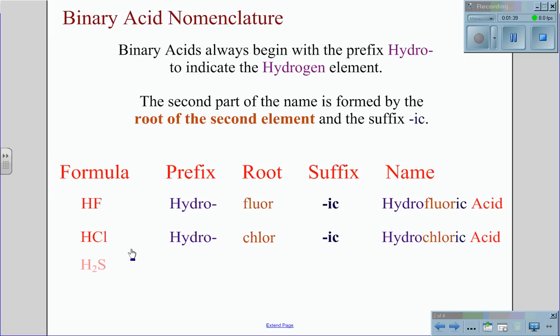For the formula H2S, the prefix is hydro, the root is sulfur, the suffix will be ic, giving us the name hydrosulfuric acid.